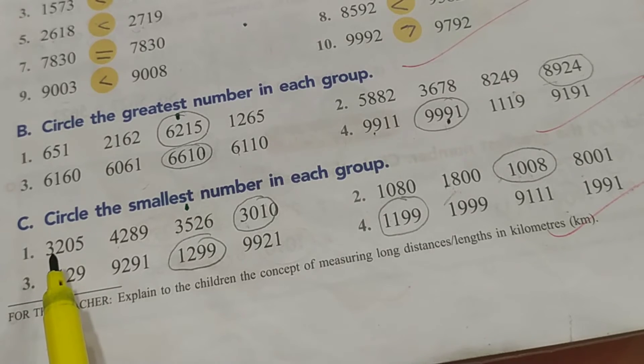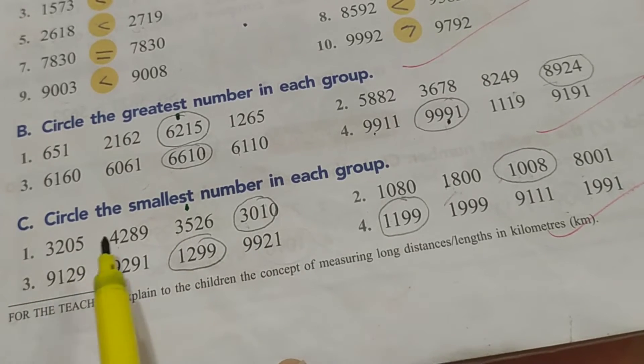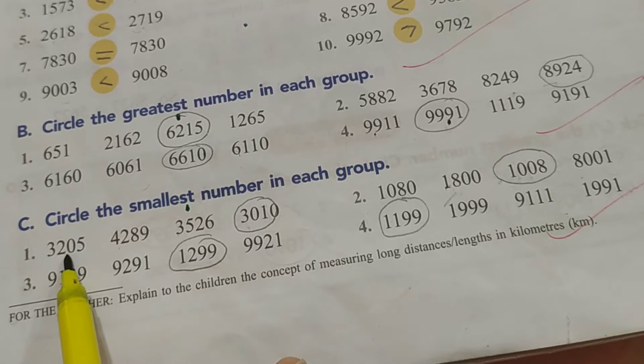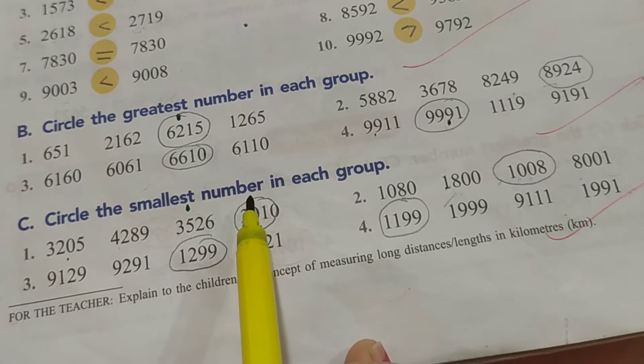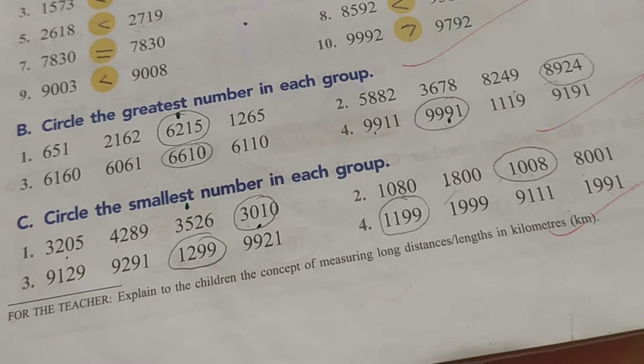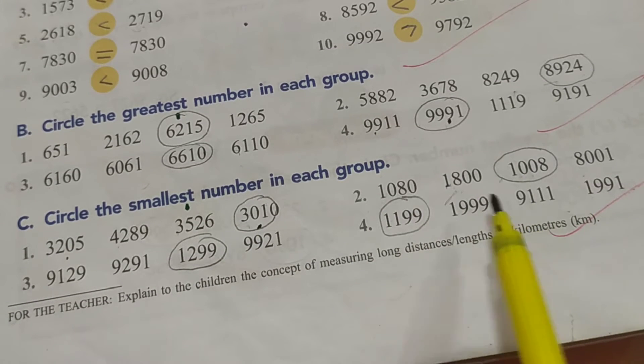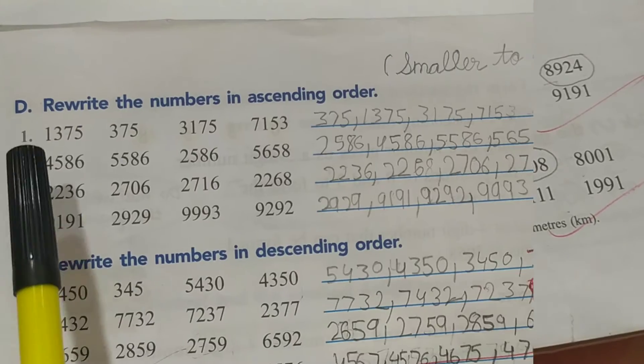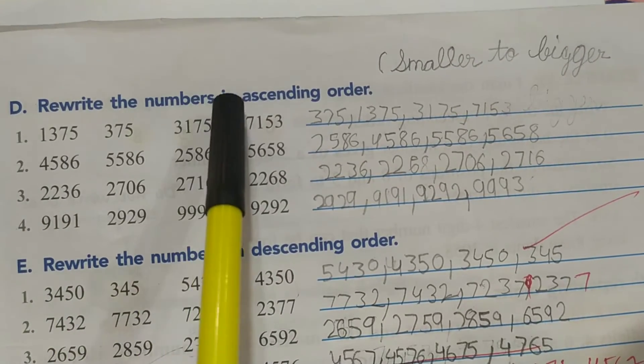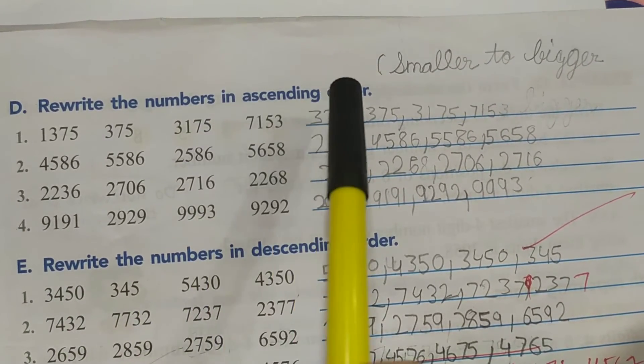First digit check 3, 4, 3, 3. So this is 4, this is gone from the game. So we check the second digit 2, 5, 0. So which one is smaller? 0 is smaller, then we will circle 3,010.